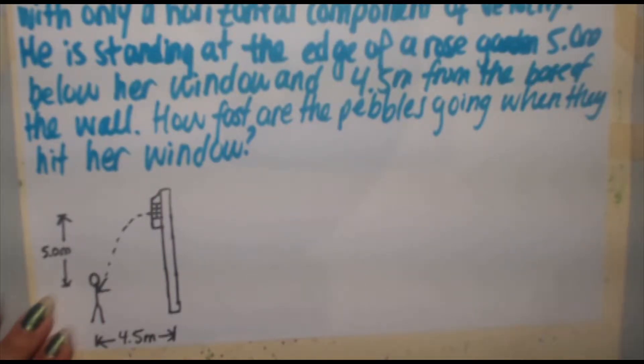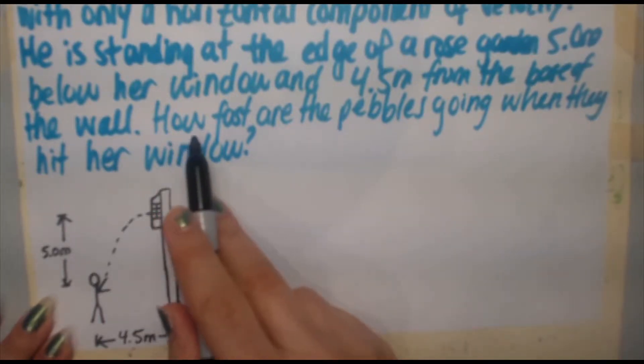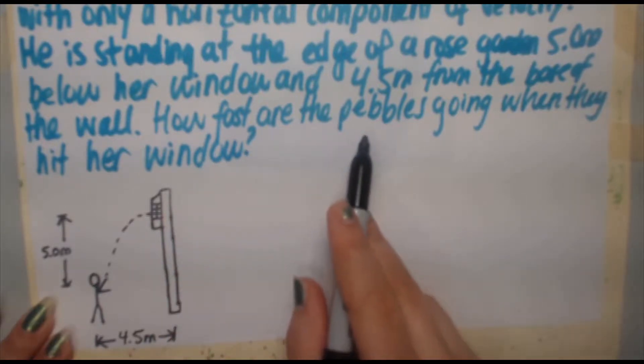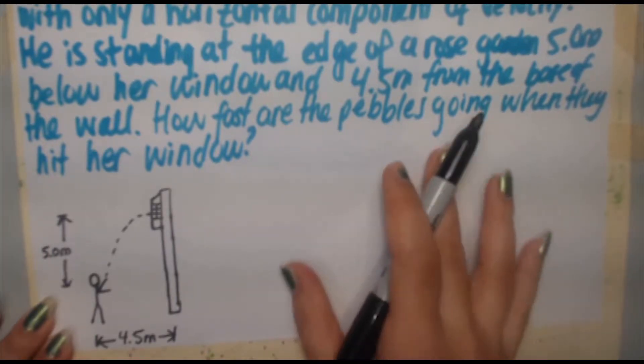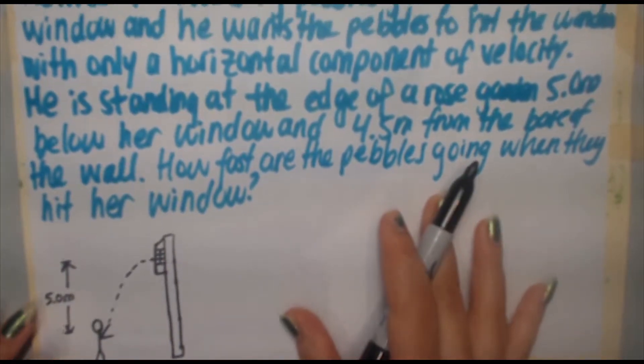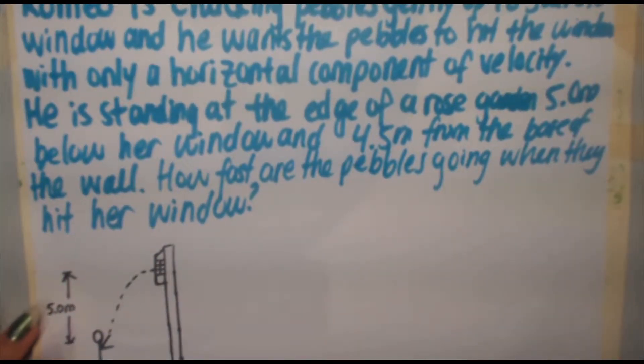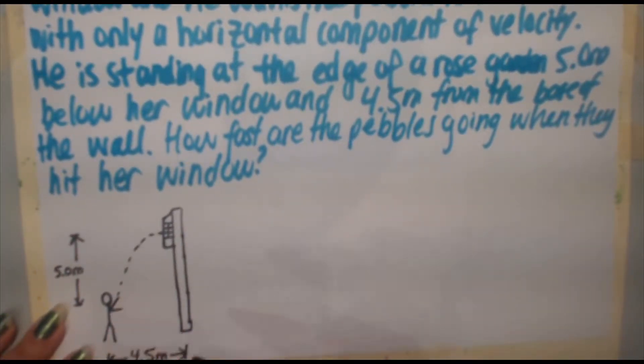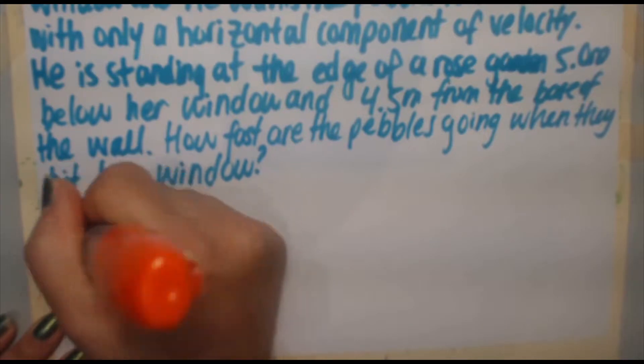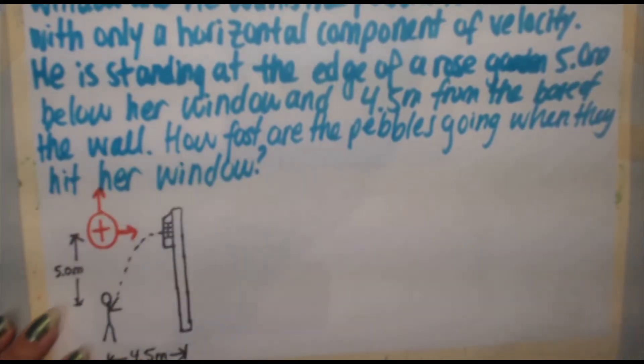Let's revisit this again. We're asked to find how fast are the pebbles going when they hit her window. Because it only has a horizontal component of velocity we're looking for the speed in the x direction. Before we even get started let's define our positive direction. Because the motion of this problem in the majority is up and to the right, I'm going to let up and to the right be positive.